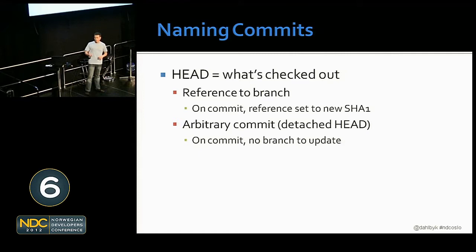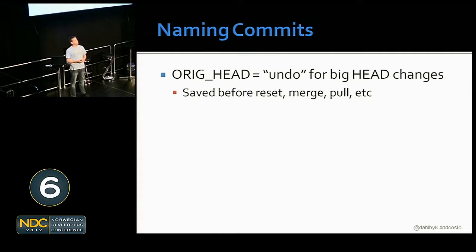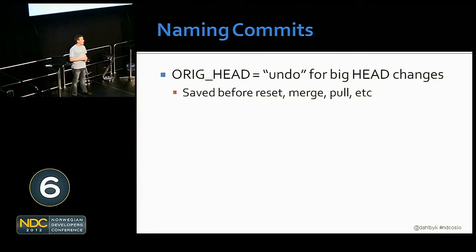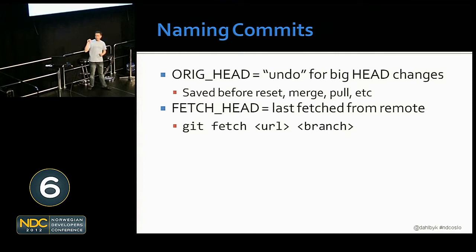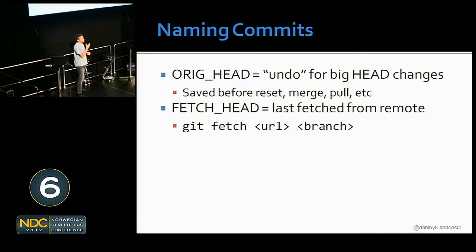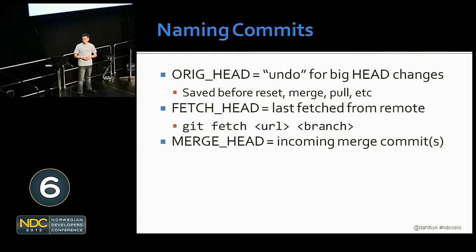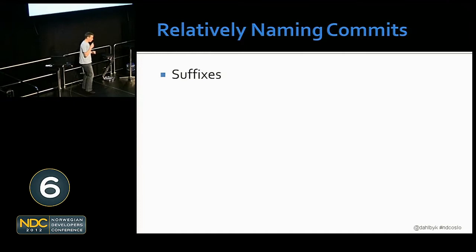A few other interesting references. `ORIG_HEAD` is something git saves for you when you do something dangerous — before a reset or rebase, it tags `ORIG_HEAD` with where you were before, so you can reset back to it. `FETCH_HEAD` is always saved when you do a fetch, so if you wanted to fetch from somebody's specific branch without adding a remote, `FETCH_HEAD` will reference that branch. `MERGE_HEAD` is the incoming merge commits — not particularly useful for end users.